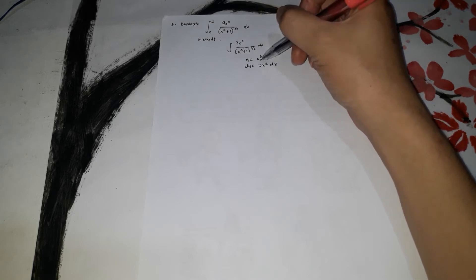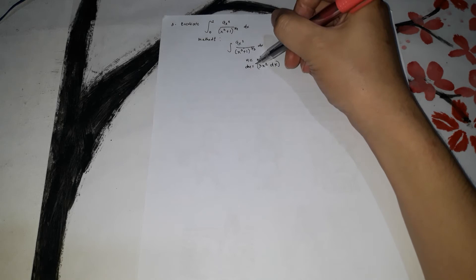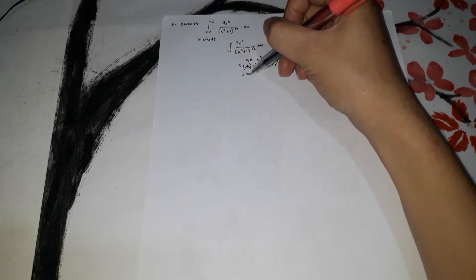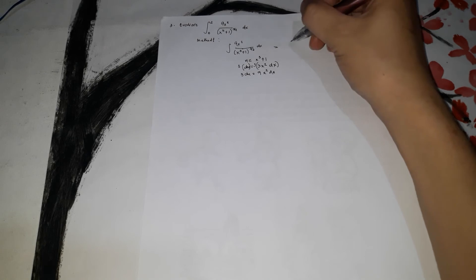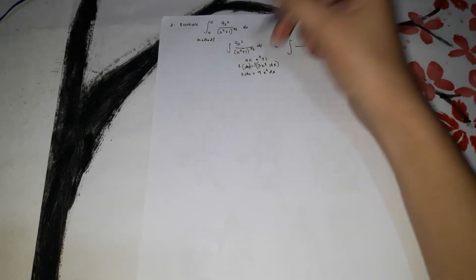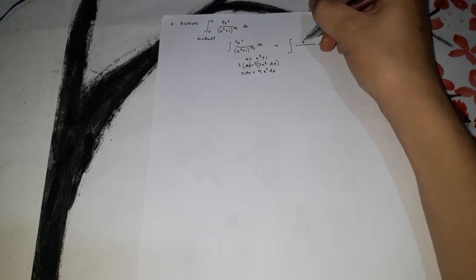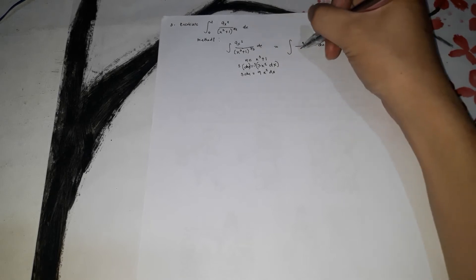Notice that both the numerator and the derivative have x² — but the numerator has 9x² while du gives 3x² dx. To make them match, multiply both sides by 3: 3 du = 9x² dx. So 9x² dx equals 3 du, and x³ + 1 becomes u, raised to the power of 3/2.